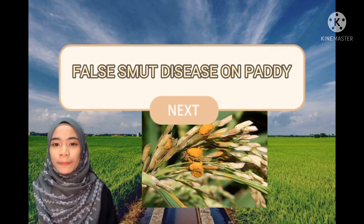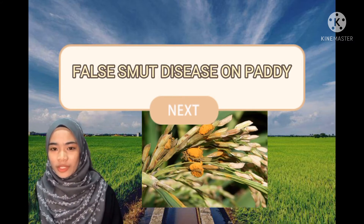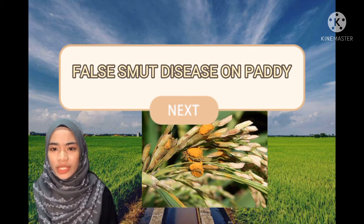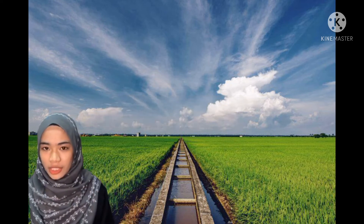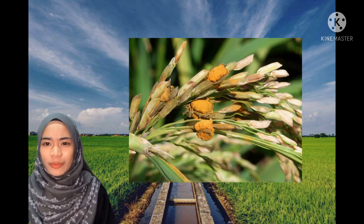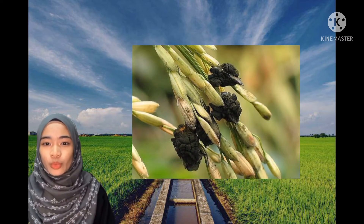Next, false smut disease on paddy. This disease is more typical when the farmer plants paddy. It affects the grain colour and low quality of grains, leading to a low market price of the grains. Initially, the spore ball is yellow in colour and has a membrane. After the membrane breaks off, the colour changes to yellowish green, then olive green, and at the end turns greenish black.